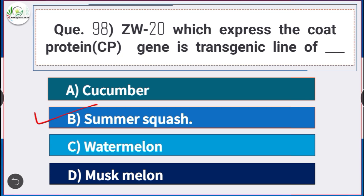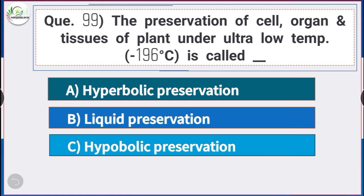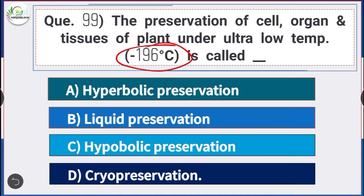Question number 99: The preservation of cell, organ and tissues of plant under ultra-low temperature, that is minus 196 degrees Celsius, is called — answer option D — cryopreservation. The preservation of plant cells under ultra-low temperature is called cryopreservation.